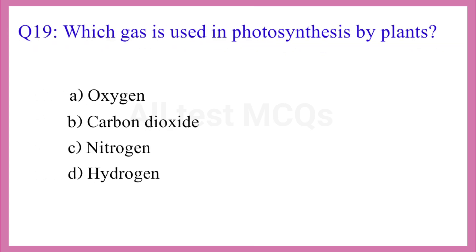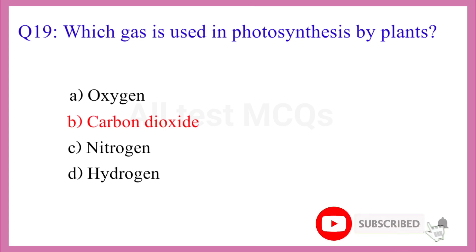Question No. 19. Which gas is used in photosynthesis by plants? The correct answer is option B. Carbon dioxide.